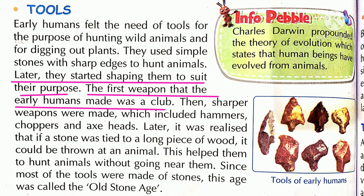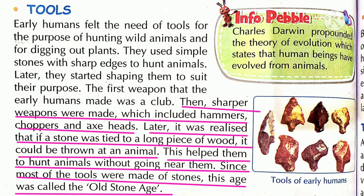Later, they started shaping them to suit their purpose. The first weapon that the early humans made was a club. Then sharper weapons were made which included hammers, choppers and axe heads. Later, it was realized that if a stone was tied to a long piece of wood, it could be thrown at an animal. This helped them to hunt animals without going near them.